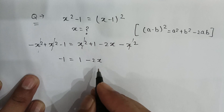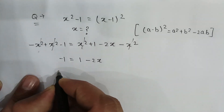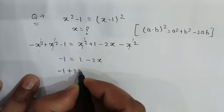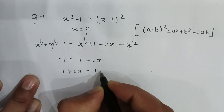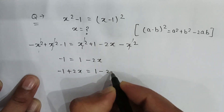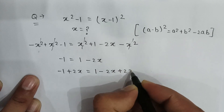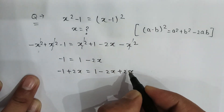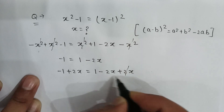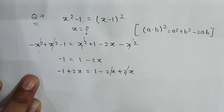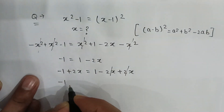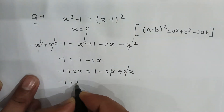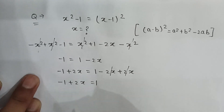Add 2x to both sides. So minus 1 plus 2x is equal to 1 minus 2x plus 2x. The 2x cancels out with minus 2x, giving us minus 1 plus 2x is equal to 1.